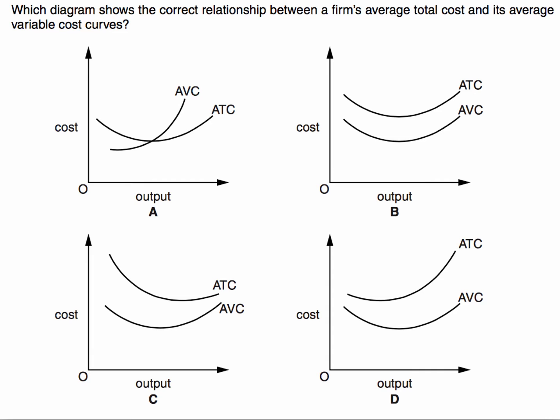relationship between a firm's average total cost and its average variable cost curves? We have four options: A, B, C, and D. Take a moment to think of your answer. Press pause when you're ready, then come back with your answer.